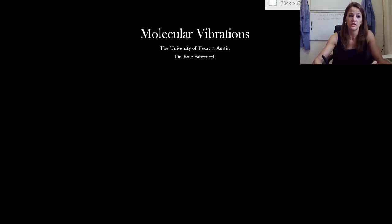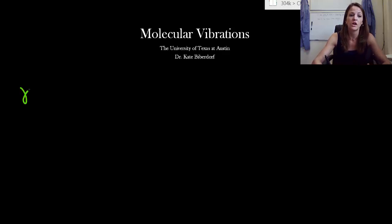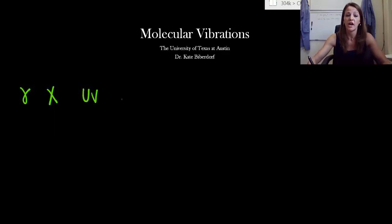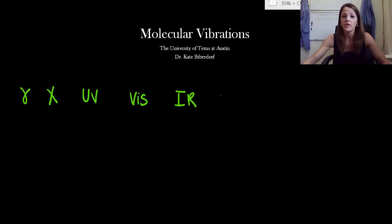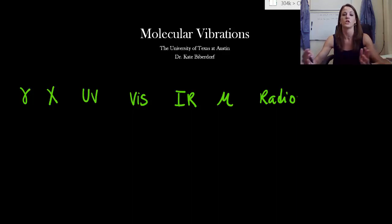Let's start off all the way over on the left side with what we're going to consider high energy, so that means they're going to have short wavelengths. We're going to start off by talking about gamma radiation, then a little bit lower energy would be x-rays, then ultraviolet, then visible, then IR or infrared, then microwaves, and then radio waves. Radio waves would be the ones with the lowest energy and the long wavelengths.